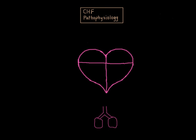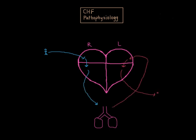But first, let's just quickly draw the diagram of the cardiovascular system again. We have our four chambers of the heart. Deoxygenated blood goes from the body to the heart, then to the lungs, and then oxygenated blood is pumped to the body by the left ventricle.